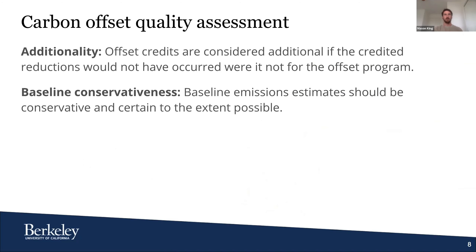There are a number of factors we've considered in this assessment, but today I'm going to focus on just two significant criteria that need to be met to ensure high-quality offsets are issued. Additionality is the idea that emissions reductions achieved by the project are uniquely a result of that offset project's efforts, and that if the project had not occurred, those reductions would not likely have been achieved. It is also extremely important that any assumptions used in calculating the baseline emissions reductions are conservative and as certain as possible.